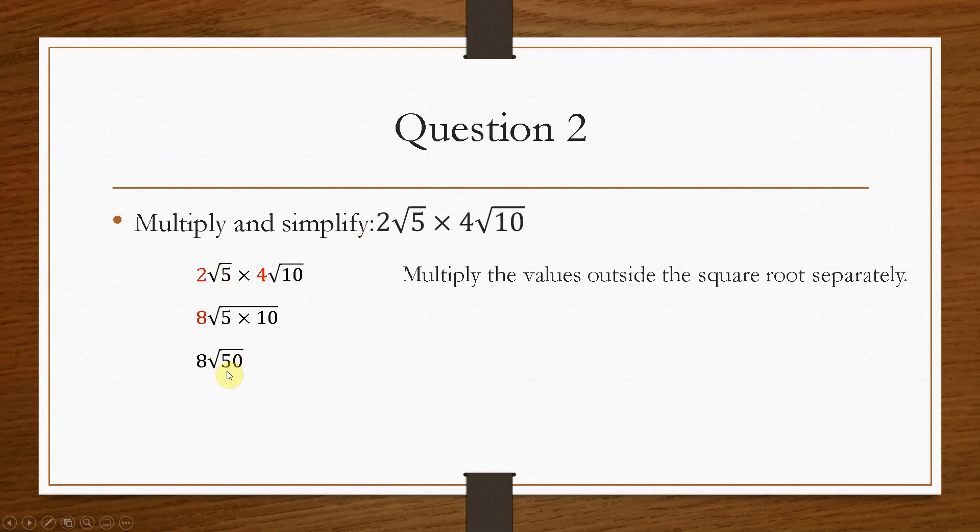Now this is asked again to simplify. This is a surd, so we can now simplify √50, trying to use one of the key values. And in this case, we'll use 25 times 2, and then that will split apart to 5√2. And for your final answer, we must break this bracket and do 8 times 5. It's only the 5, it's not including the √2, it's just 8 times 5. So your final answer will become 40√2.